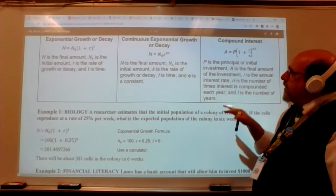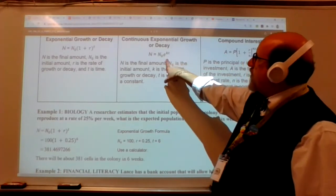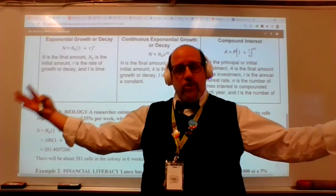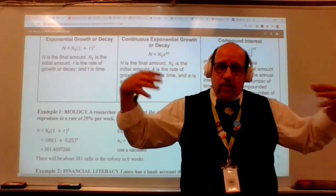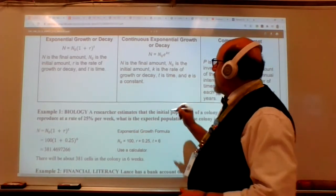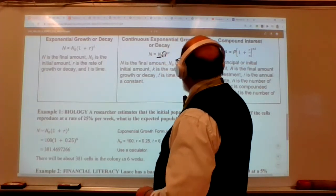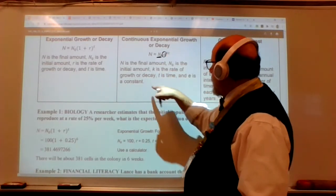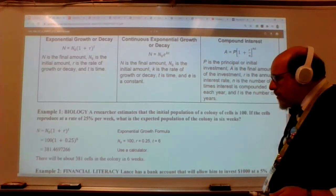This one says you have a population of 100 cells and they reproduce at a rate of 25% every week. What is the expected population in six weeks? So we'll set our time as weeks, and we'll say that that's six weeks. We like to keep T in years, but that's when we're talking more about interest. And that's this little fellow over here. I'm going to talk about another interest formula that goes along with this.